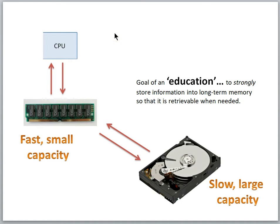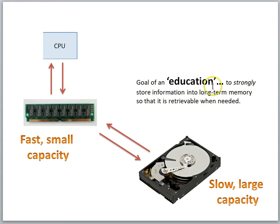In previous lessons, we've made a comparison between brains and computer systems. Brains and computers have a fast, limited capacity memory system — that's the RAM in the computer — and brains as well as computers have a slower, larger capacity memory system, and that's the hard drive. So the goal of an education is to strongly store information into long-term memory so that it is retrievable when needed.